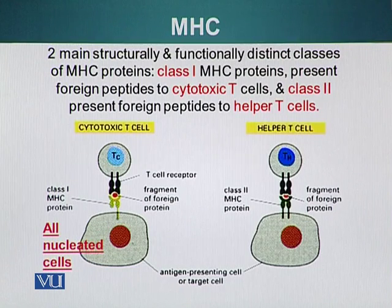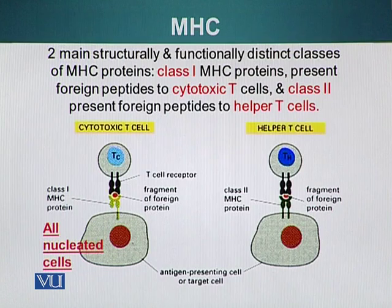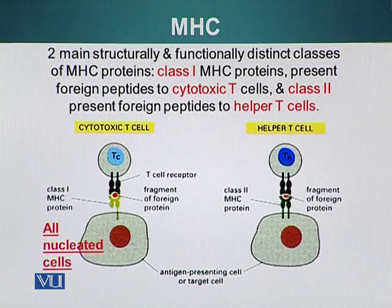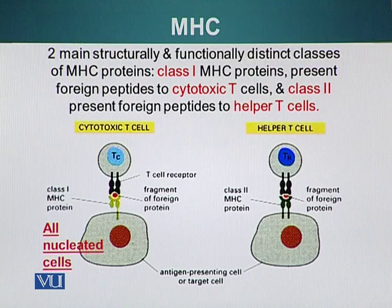In the diagram, MHC proteins are shown displaying a protein fragment which may or may not be foreign in origin — it is being displayed by these cells and T cells can recognize it. Class I MHC proteins are present on the surface of all nucleated cells, whereas Class II proteins are present only on antigen-presenting cells: B cells, macrophages, and dendritic cells.